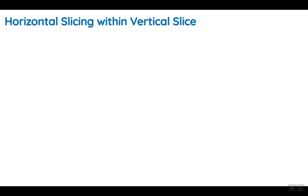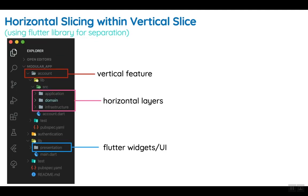Horizontal slicing within a vertical slice is the recommended way to structure your Flutter application, where the application is broken down into vertical features, and those features' components are organized using horizontal slicing. As you can see from the snippet, we have an account feature, and in that account feature we have the core domain, the application logic, and also our infrastructure layer.